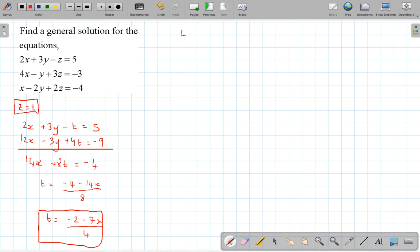So I'm going to have this as being 4x minus y plus 3z's, but the z's are t's, minus 3. Now I'm going to multiply this by 4.